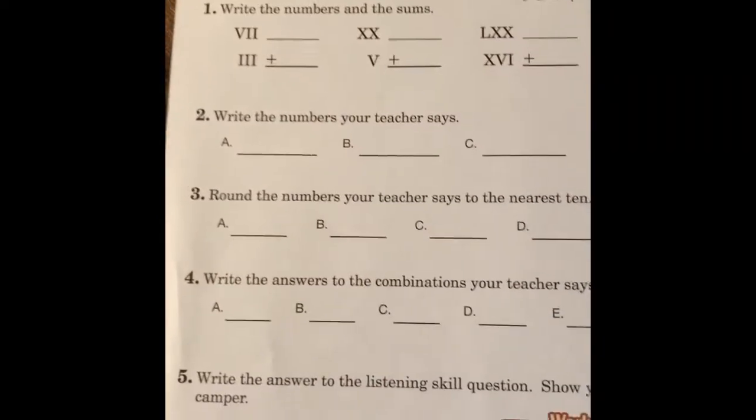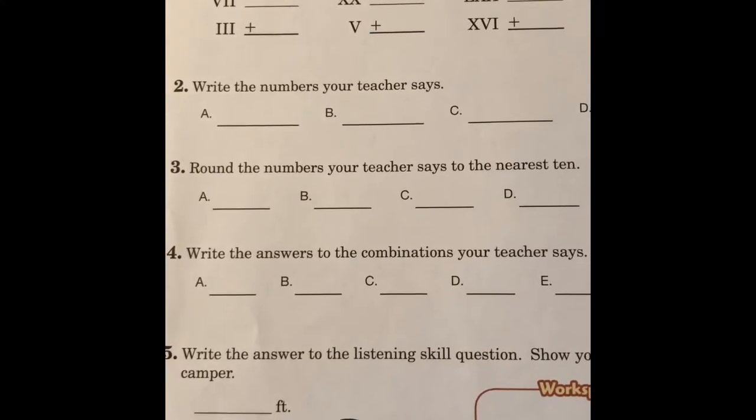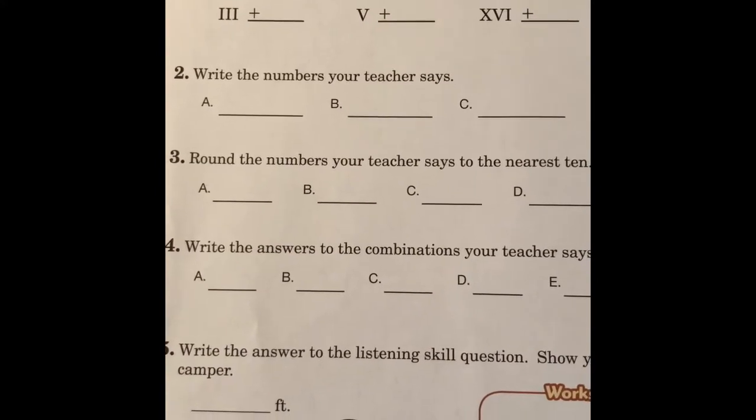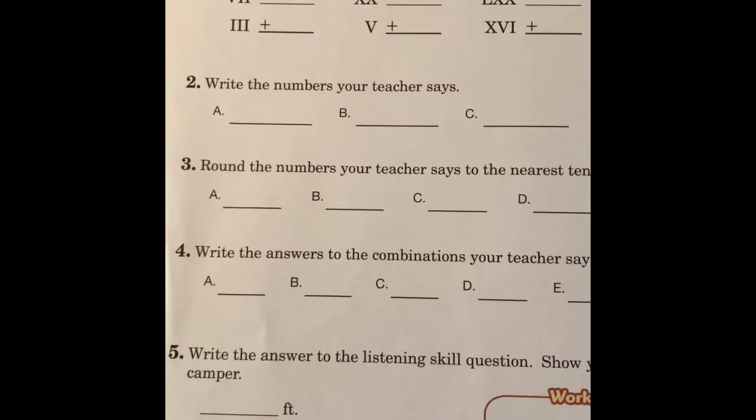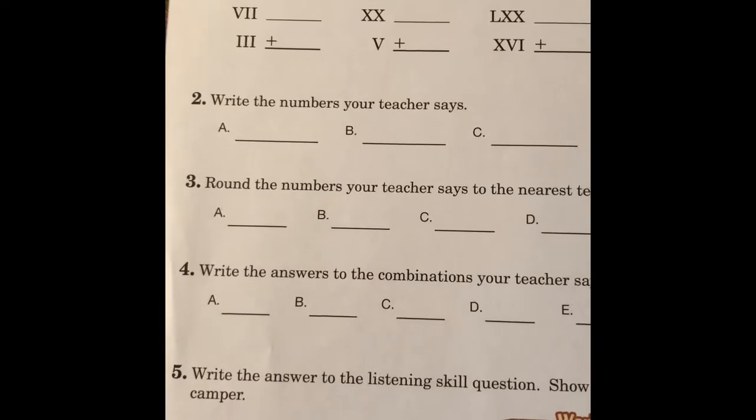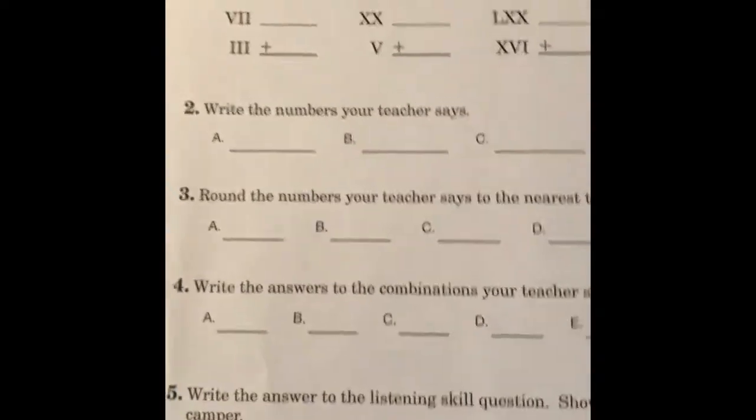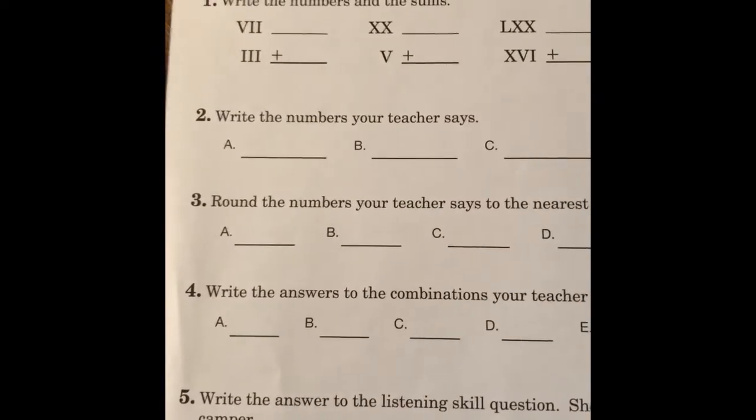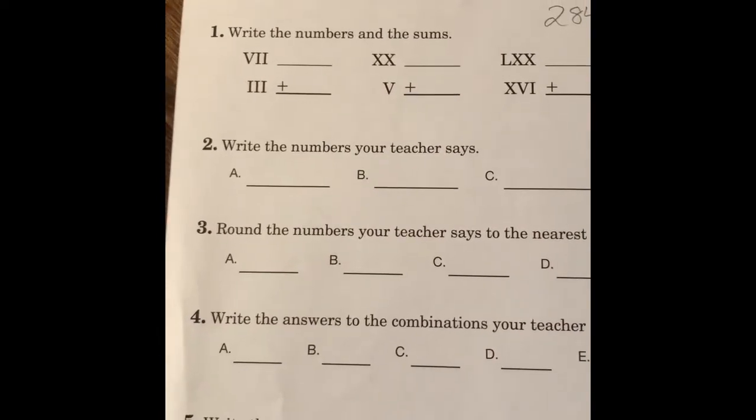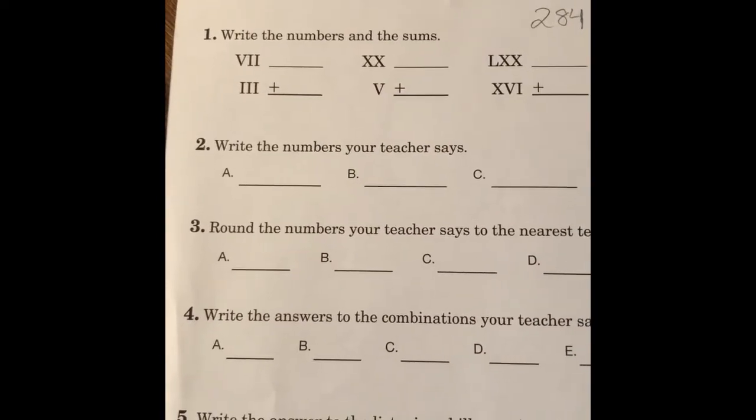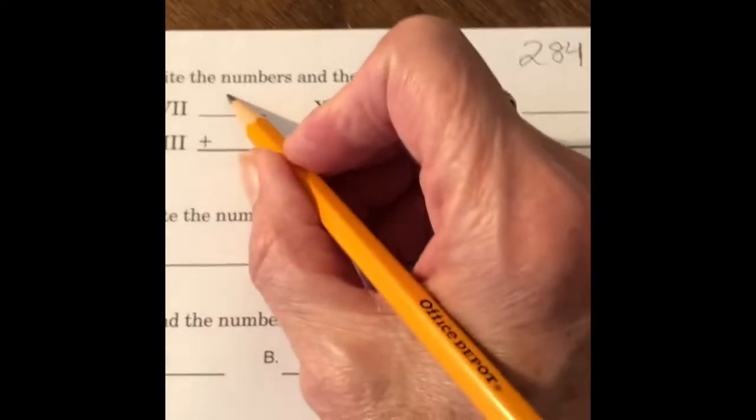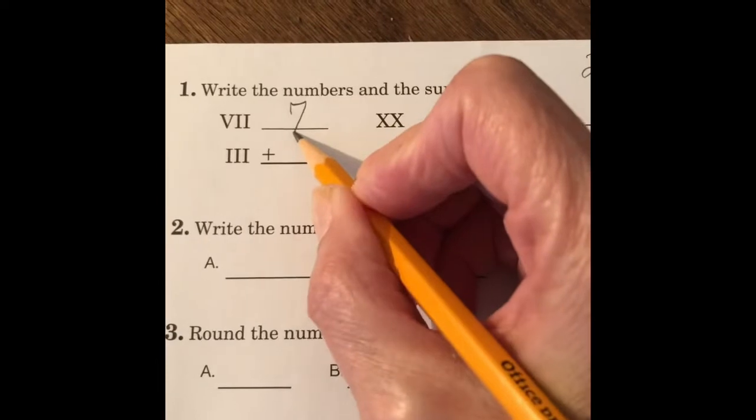And now we're going to work the class side of page 284. This is the class side of the paper, the one we worked together. Number 1, write the numbers and the sums. So we are going to write the Roman numerals. What is VII? Remember, V is 5, I is 6, and 1 more I is 7. So VII is 7.